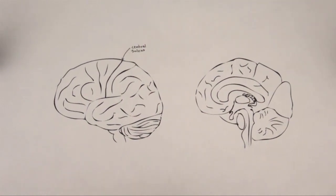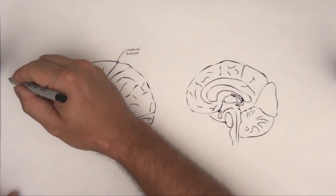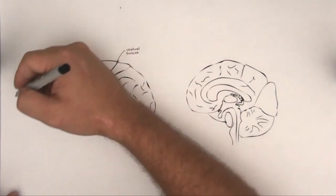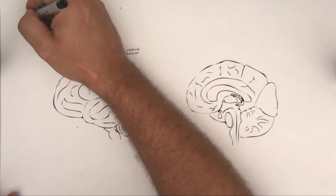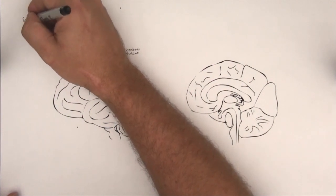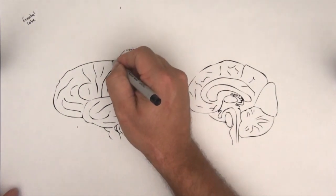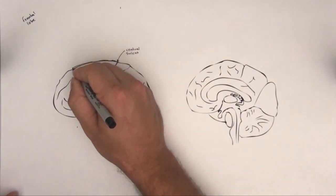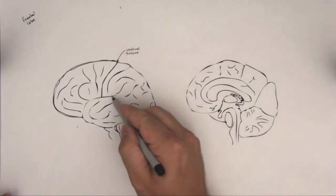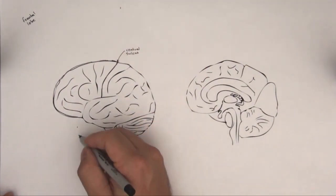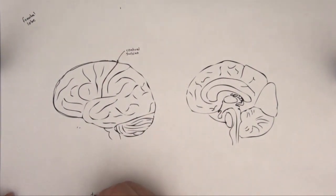If we wanted to do that real quick, we could talk about the lobes. This whole lobe out here is the frontal lobe. I'm going to have a lot of things written on here, so I don't really want to clutter it up too much. So that's the frontal lobe. This area right through here, that's the temporal lobe.